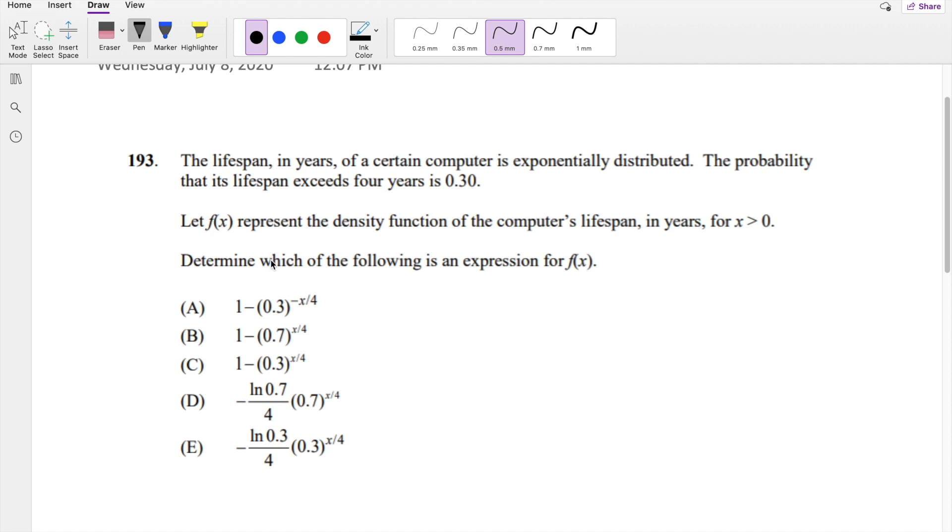Okay, assuming you already attempted it, let's just dive right in. So the lifespan in years of a certain computer is exponentially distributed, which we know is 1 over lambda, e to the negative t over lambda. The probability that its lifespan exceeds 4 years is 0.3. So basically they're saying the probability that X is greater than 4 years is 0.3.